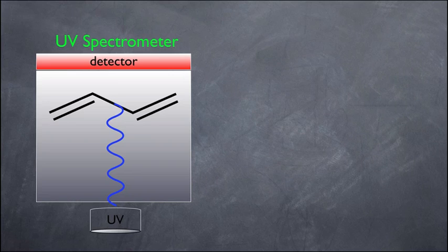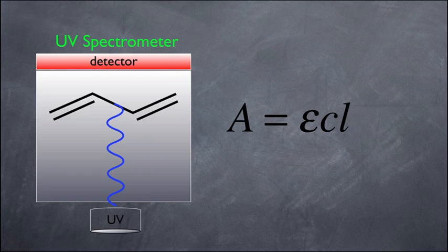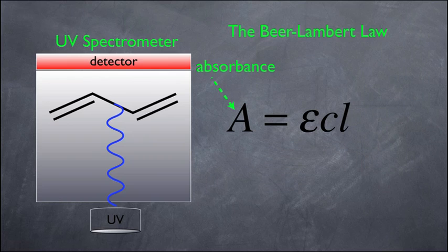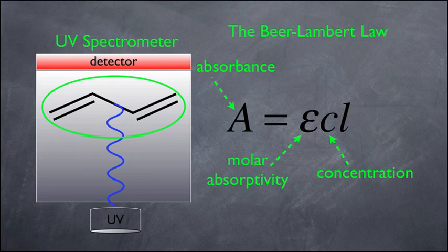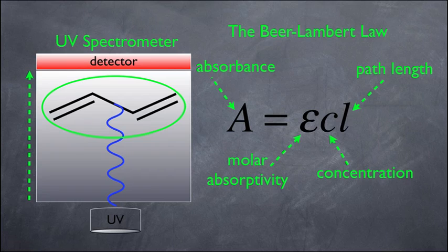One other aspect is an equation related to the UV spectrometer called the Beer-Lambert Law. Basically, you plug in the absorbance from the y-axis of the spectrum to calculate what's called the molar absorptivity, epsilon (ε). You also plug in the concentration of your sample and L, the path length — how far the UV light travels to reach the detector. You wouldn't need to memorize this equation for the MCAT, but at least understand what is plugged in where.